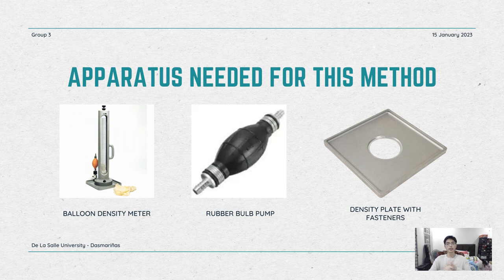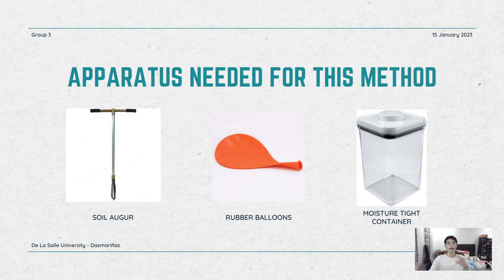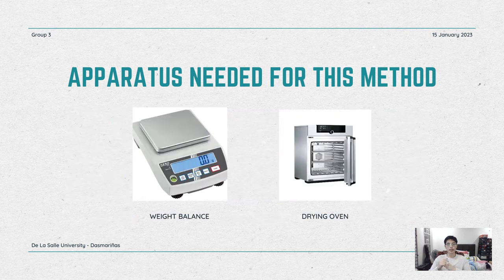The apparatus needed for this method are the balloon density meter, the rubber bulb pump, a density plate with fasteners, the soil auger, rubber balloons, a moisture-tight container, a weighing balance, and a drying oven.